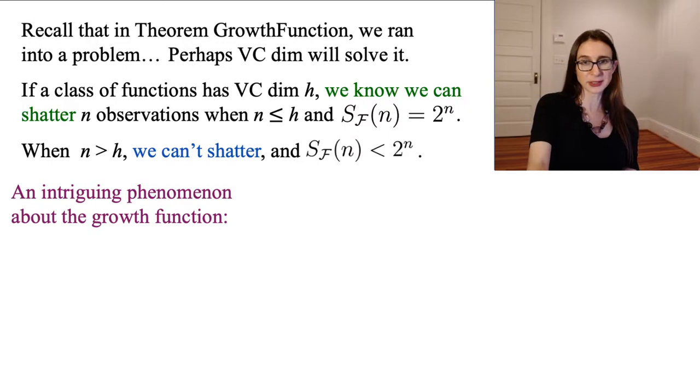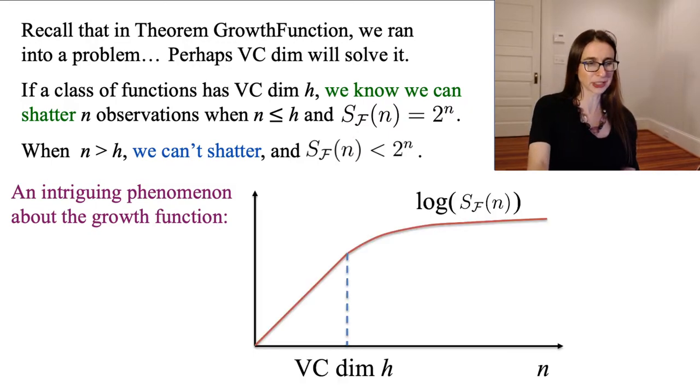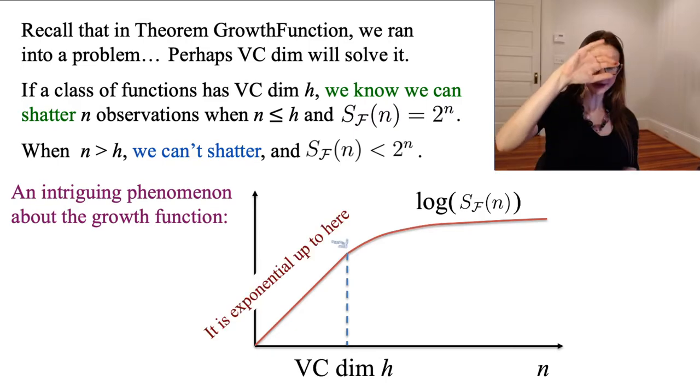So an intriguing phenomenon happens about the growth function, which is that if you plot the growth function as a function of the number of data points N, you see that you get exponential growth up to the VC dimension, because it's 2 to the N, right?